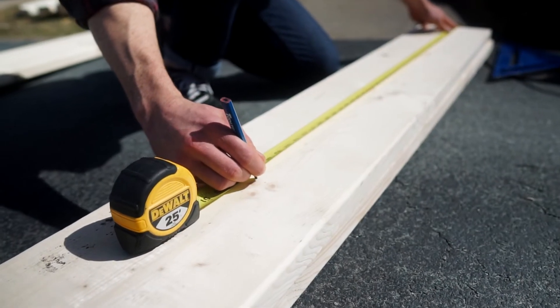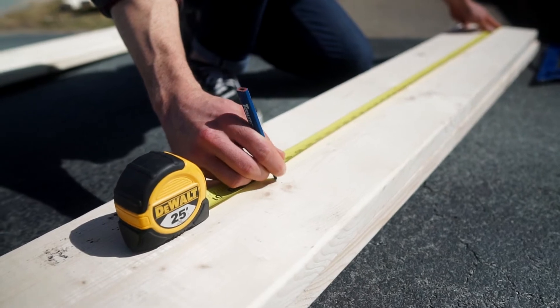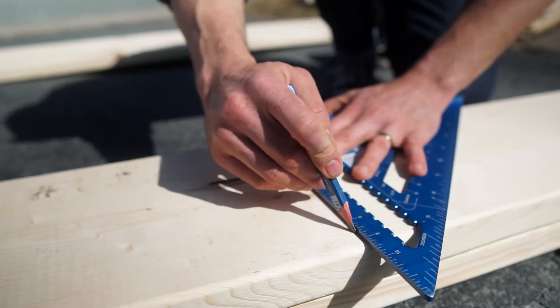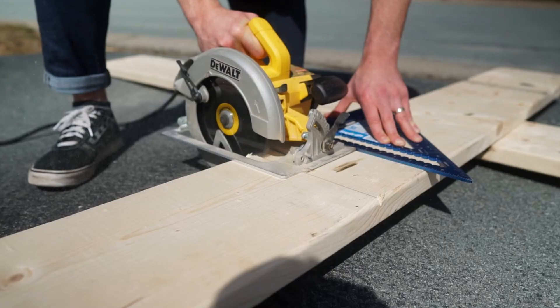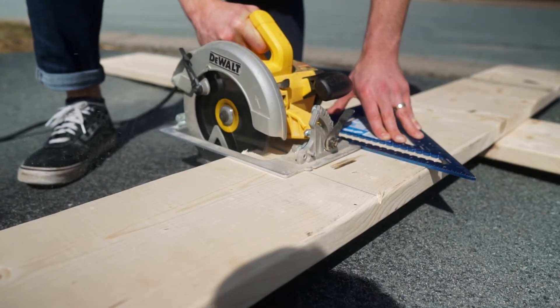First things first, grab a 2x10x8 and cut it directly down the middle. So now you have two 8-foot lengths for the sides and two 4-foot lengths for the ends.